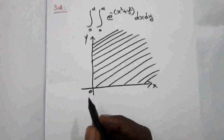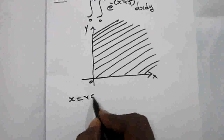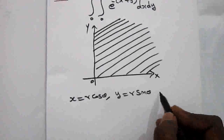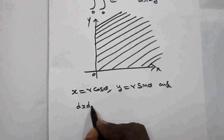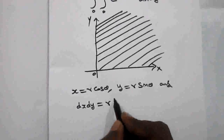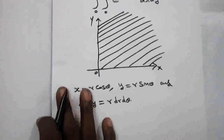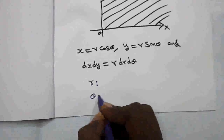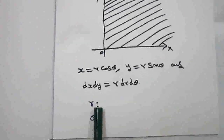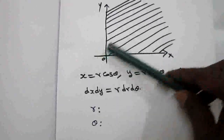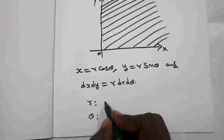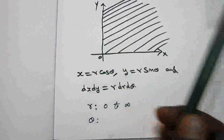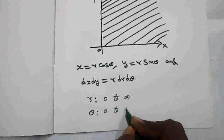To convert into polar coordinates, put x equal to r cos θ, y equal to r sin θ, and dx dy equal to r dr dθ. Now the limits for r and θ: since it covers the entire region in the first quadrant, r limit is 0 to infinity, and θ limit in the first quadrant is 0 to π/2.